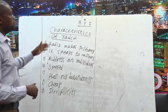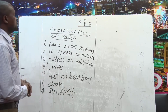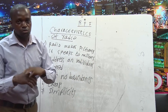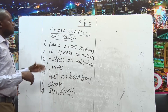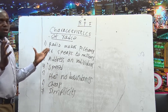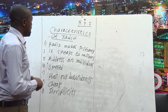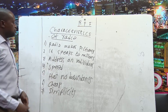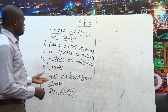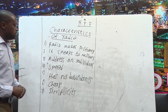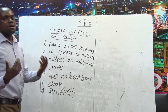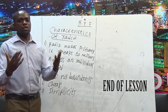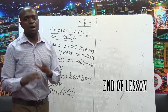I hope you are able to understand some of the major characteristics of radio. Radio makes pictures — when you are talking, we need to see the immediate aspect of what you are talking about. It speaks to millions, or diverse populations, at the same time. Radio addresses an individual, not a population. Radio is speedy, quick in dissemination of content, and it has no boundaries. Radio is cheap, and last but not least, the simplicity of radio in terms of communication and affordability. Thank you for your time. Let's meet next time at the same place.